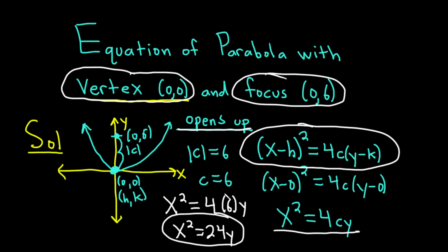And then we use the fact that the absolute value of c is the distance between the focus and the vertex. So that's 6. And because it opens up, c is positive. So we use 6 as our value of c. If it had opened down, then c would be negative, and we would have negative 24y here instead of 24y. I hope this video has been helpful to someone learning about parabolas. Good luck.